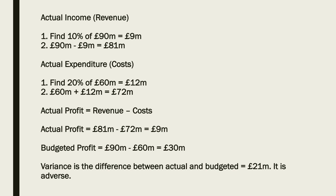Now because we've got the revenue and the costs — or the income and expenditure — we can calculate the actual profit. Actual profit is revenue minus costs, so that's 81 million take away 72 million, which comes to 9 million. So the actual profit is 9 million pounds.